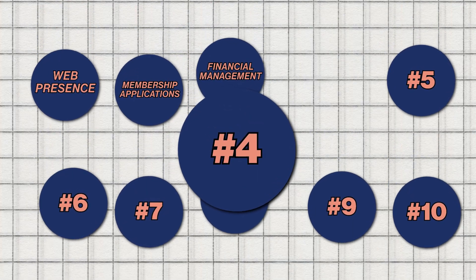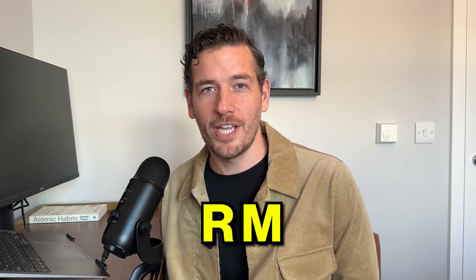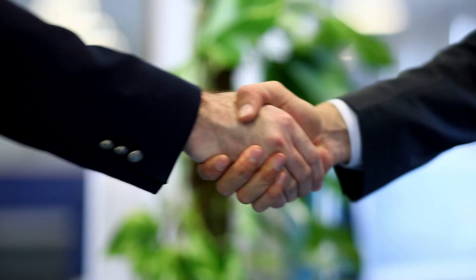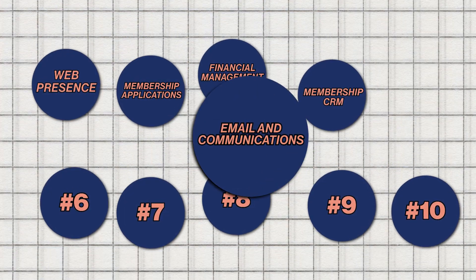Feature number four is another crucial aspect: membership CRM. The key here is the last two letters, RM, which stand for relationship management. Where membership application and financial management relate to collecting information and payment at the point when a member is joining or renewing, the relationship management component is really about progressing that relationship over time. Any contacts the member has with you, any special requests, any volunteering of their time that needs to be tracked — all of this gives you a full picture of the relationship between the member and your organization.